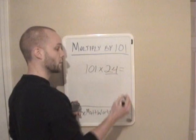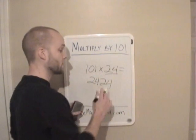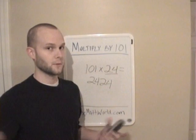So in this example, 101 times 24 is 2424, or 2,424. That's your answer. Pretty easy. And we'll do another one.